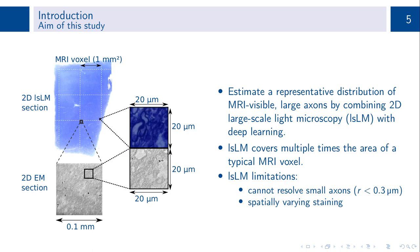The aim of this study was to estimate a representative distribution of MRI-visible large axons by combining 2D large-scale light microscopy, or short LSLM, with deep learning. The image shows a typical LSLM section that covers multiple times the cross-sectional area of an MRI voxel of 1 mm edge length, highlighted as wide dashed lines. In contrast, the EM section is much smaller.